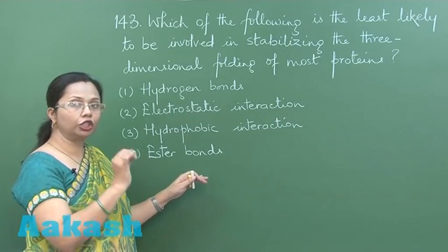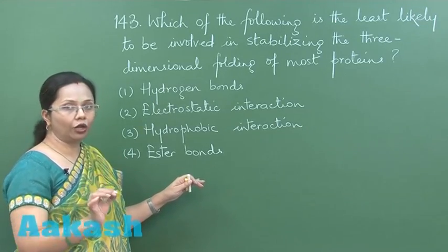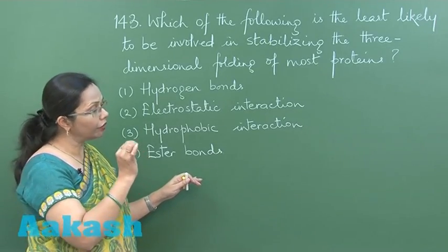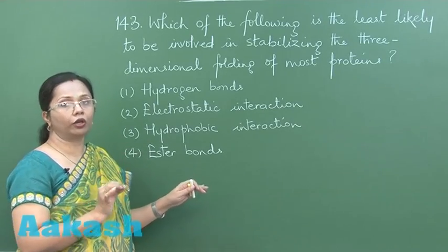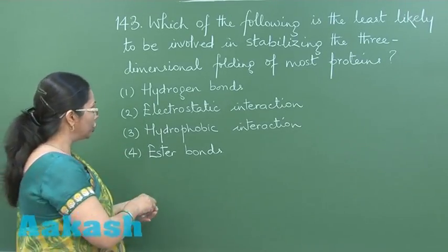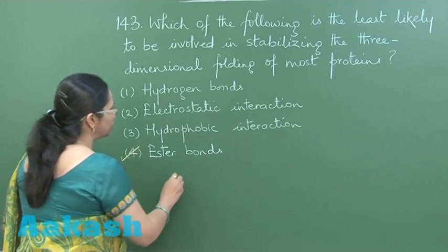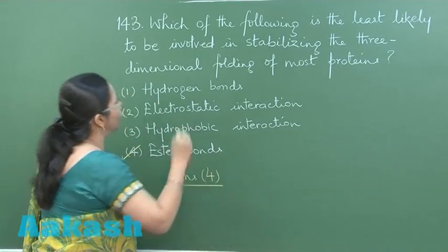Such bonds we can see during the formation of lipids, where the carboxyl group of the fatty acid esterifies with the OH of the alcohol, or when there is a reaction between phosphoric acid and the OH of a ribose or deoxyribose sugar. This is not seen in proteins, so our answer is option number four.